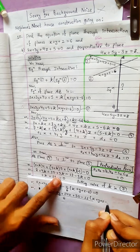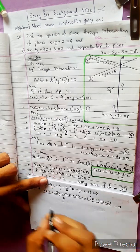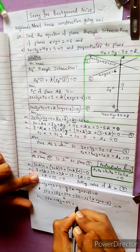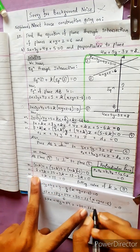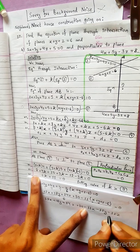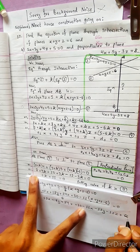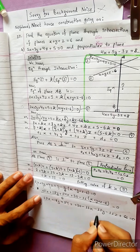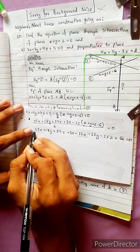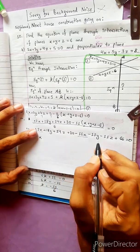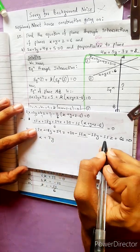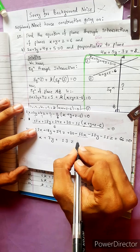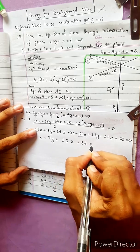x plus y plus z minus 6 equal to 0. This gives us 12x plus 18y plus 24z plus 30 minus 11x minus 11y minus 11z plus 66 equal to 0. Calculating: 2x and 11x gives x; 18y minus 11y gives 7y; 24z minus 11z gives 13z. Plus 30 plus 66 equals 96, equal to 0. This is the answer.